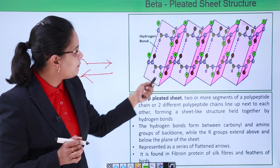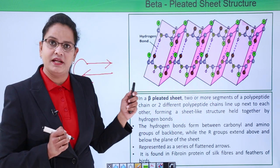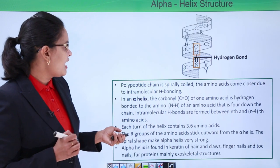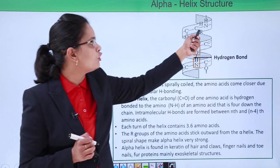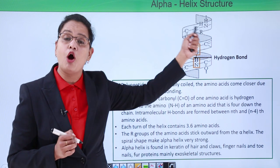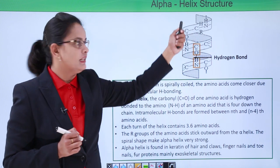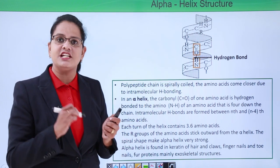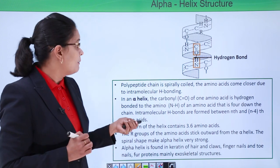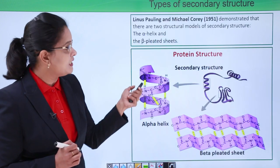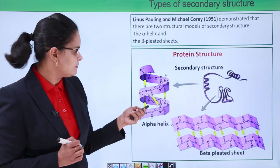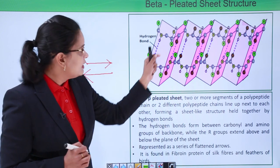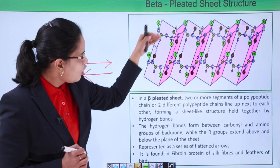Let us see in the diagram. In the alpha helix, the R groups lie outside the helix — they do not lie inside. Inside the helix there is only hydrogen bonding. But in beta pleated structures, the R groups lie above or below the plane.